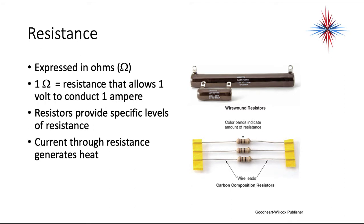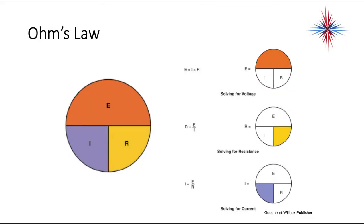We have one more component to talk about of electrical behavior. It's called resistance, measured in ohms. One ohm of resistance allows one volt to conduct one amp. Resistors provide specific levels of resistance. Current through resistors generate heat. That's a pretty important concept because we're going to use that as we move through the program. Current through resistance generates heat. But resistance is in ohms. One ohm of resistance allows one volt to conduct one amp.